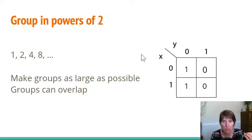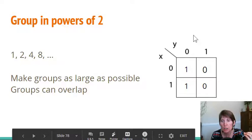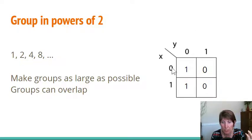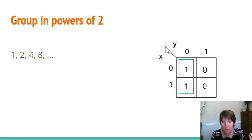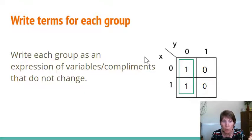And we want to make groups as large as possible. So here we have a group of one and a group of one. But we also have a group of two. And so when we get to choose, we're going to choose the group of two because that's a larger group. And we prefer to have larger groups. It will actually make our terms smaller and more simple. So here we're going to take this group of two. Now, once we get that group of two, we want to write an expression that represents each group. So however many different groups we have, we write an expression for each one. And that expression is a multiplication of the variables or the complements, depending on whether it's a zero or a one, that do not change.